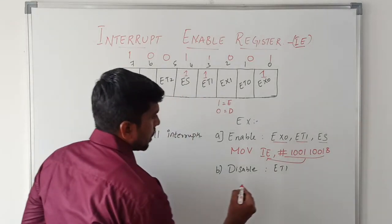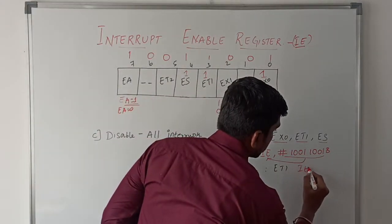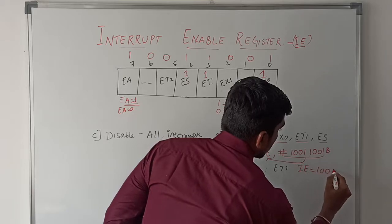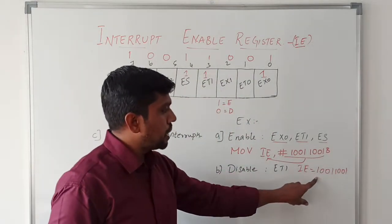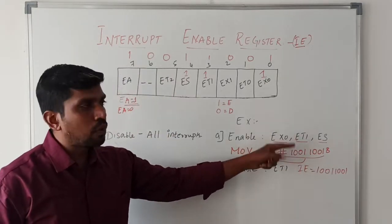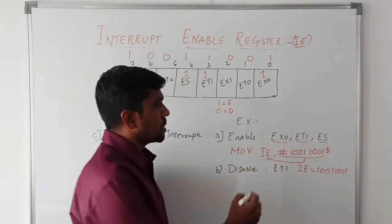So now IE register value is 10011001. Based on this bit value, the corresponding interrupt is enabled or disabled. After execution of this instruction, enabling the EX0, ET1, and ES, these three interrupts are enabled.